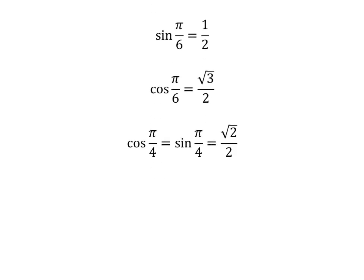As we know, sine of pi upon 6 is equal to one half, cosine of pi upon 6 is equal to square root of 3 upon 2, and cosine of pi upon 4 is equal to sine of pi upon 4 is equal to square root of 2 upon 2. So we plug in these values in the above equation.